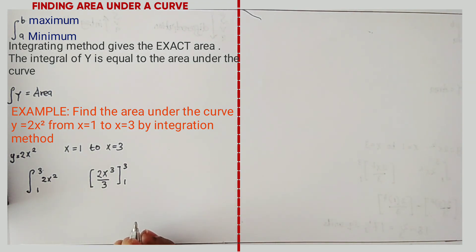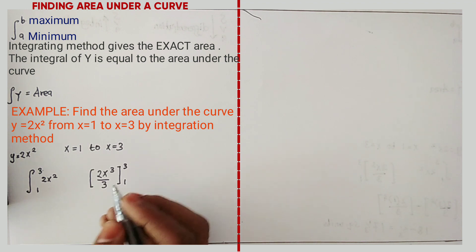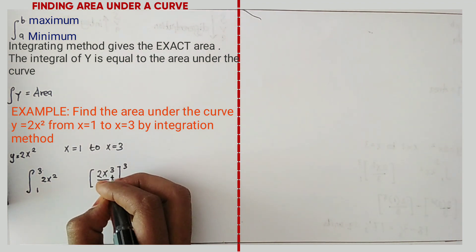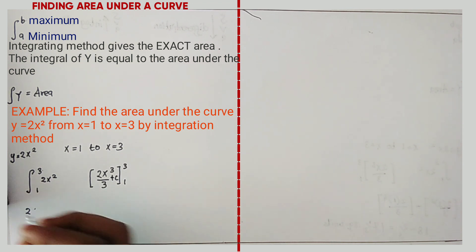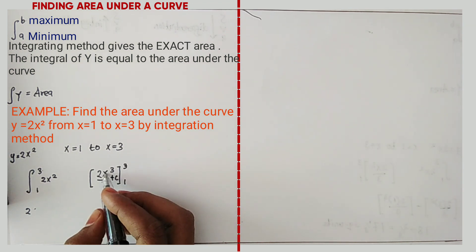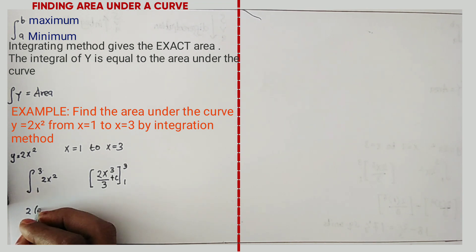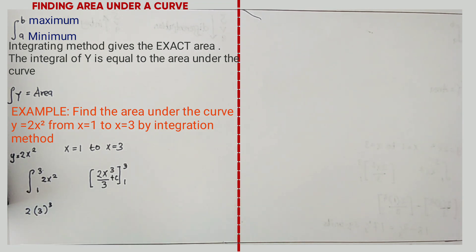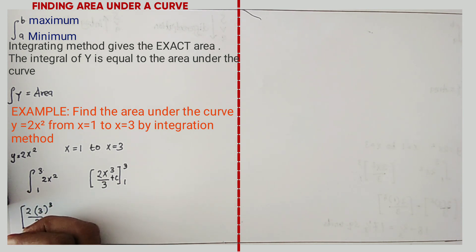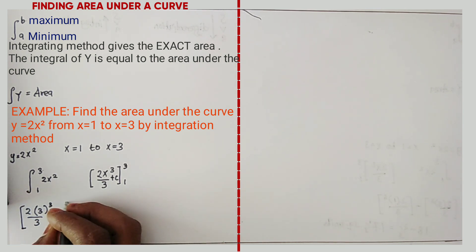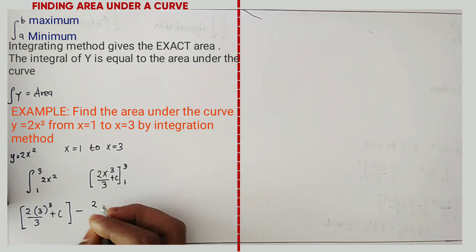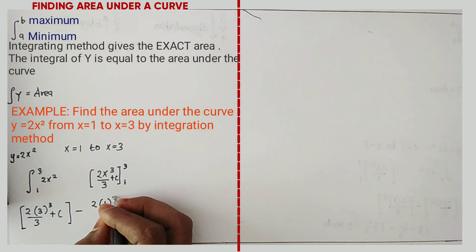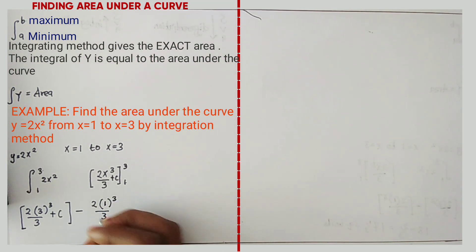When we are calculating the area, remember that we have a constant of integration, that is plus C. When integrating, you have a constant of integration which was 0 before. We substitute the maximum value 3 into where X is: we have 2 times X³ divided by 3 plus C. Minus, we subtract using the minimum value: 2 times 1³ divided by 3 plus C.